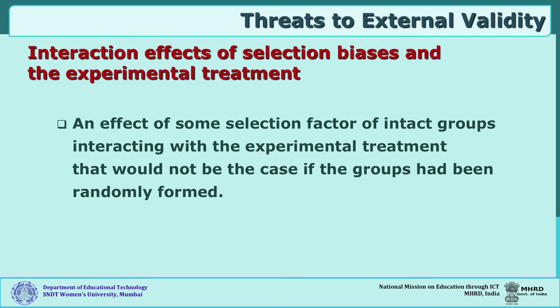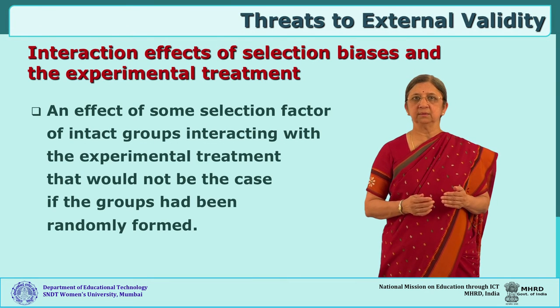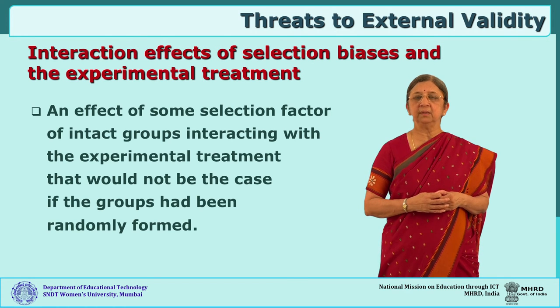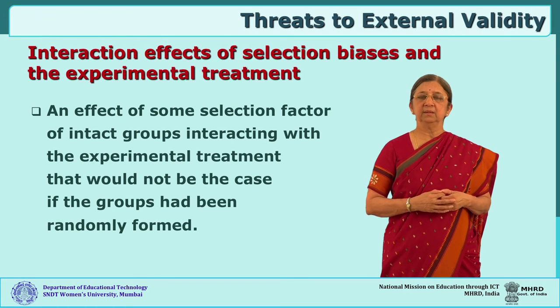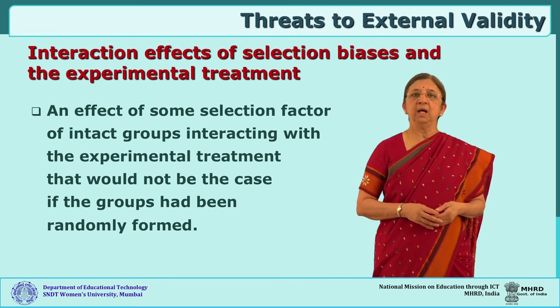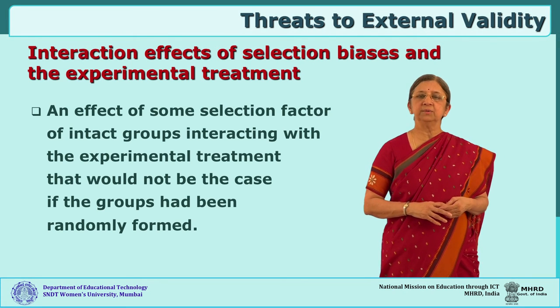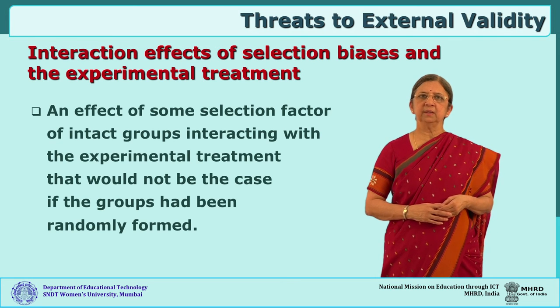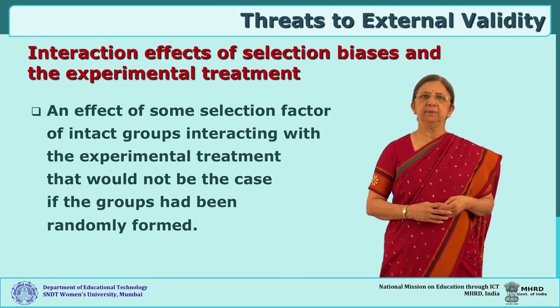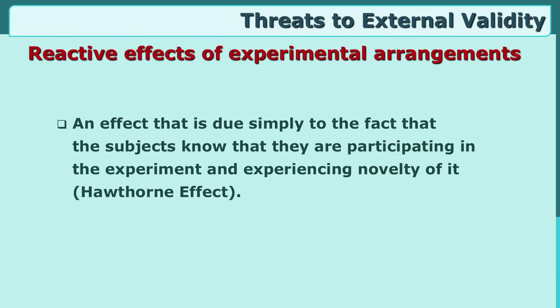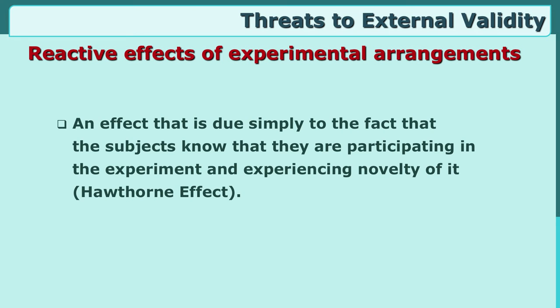The second threat to external validity is the Interaction Effect of Selection Bias and the Experimental Treatment. The effect of selection of subjects in the experimental group and control group — if you are not careful, the groups who interact with the treatment may show different interaction effects if their selection is faulty, putting the relationship between independent and dependent variable at stake. This threat can be taken care of by selecting the sample using random sampling.